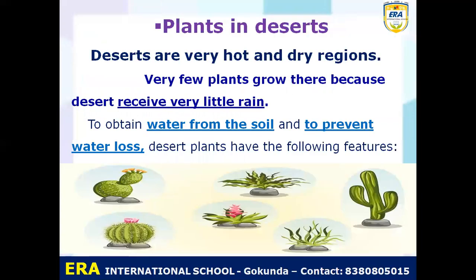Let's start today's session with the types of terrestrial plants. The first type is plants in deserts. Deserts are very hot and dry regions with very little water. Very few plants grow there because they receive very little rain. To obtain water from the soil and to prevent water loss, desert plants have the following features.